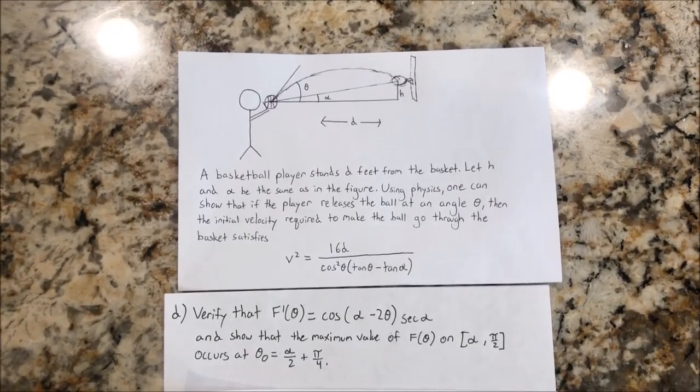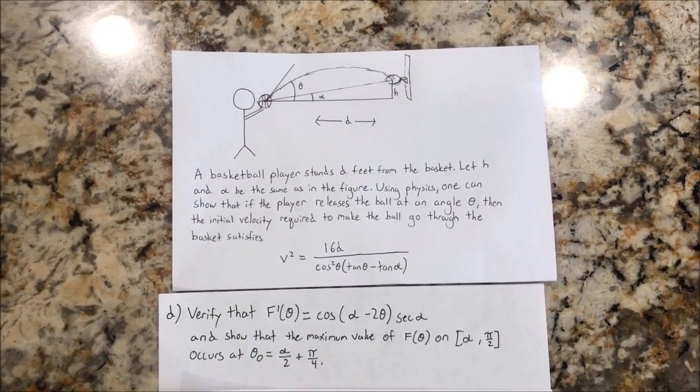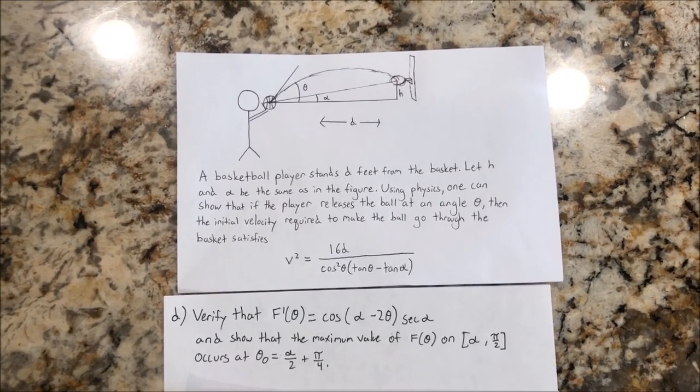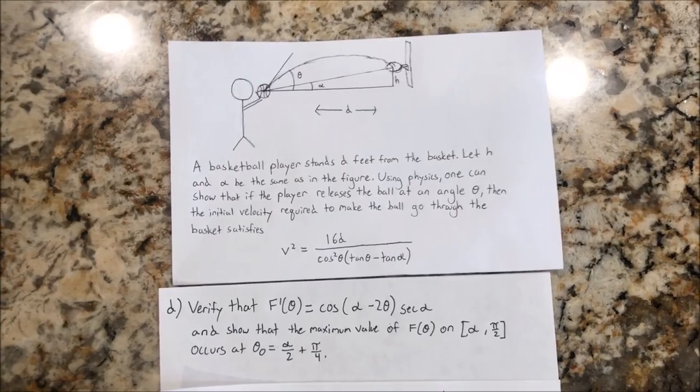So in part D, we found that the optimal angle theta 0 is equal to alpha over 2 plus pi over 4, which would be the angle between the hoop and the ball divided by 2 plus 45 degrees.